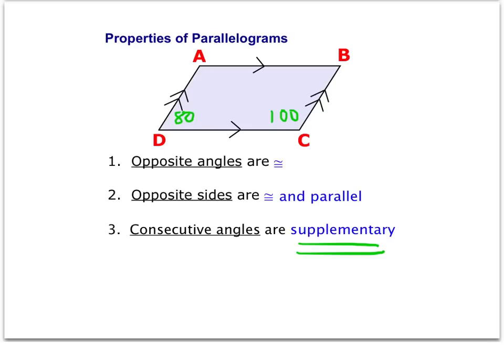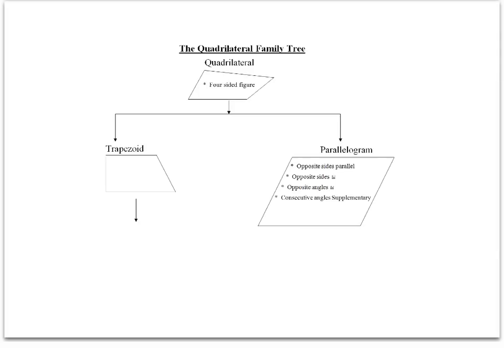Go ahead and add these pieces to your quadrilateral family tree. There are three pieces but actually four separate statements: opposite sides parallel, opposite sides congruent, opposite angles congruent, and consecutive angles are supplementary. Notice that I left a little space here because we will be adding a few more properties to the parallelogram as we go along.